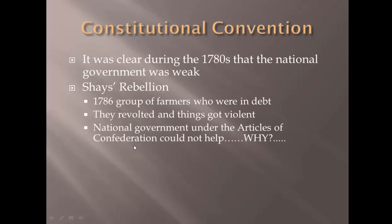Under the Articles of Confederation, they could not help. Why didn't the Articles of Confederation, our first national government, help Massachusetts? It could not tax the people, so it had no money. It did not have a military. It just really didn't have any power. Our founding fathers built our first national government in 1781, known as the Articles of Confederation, and they didn't build it strong enough. Zero power.